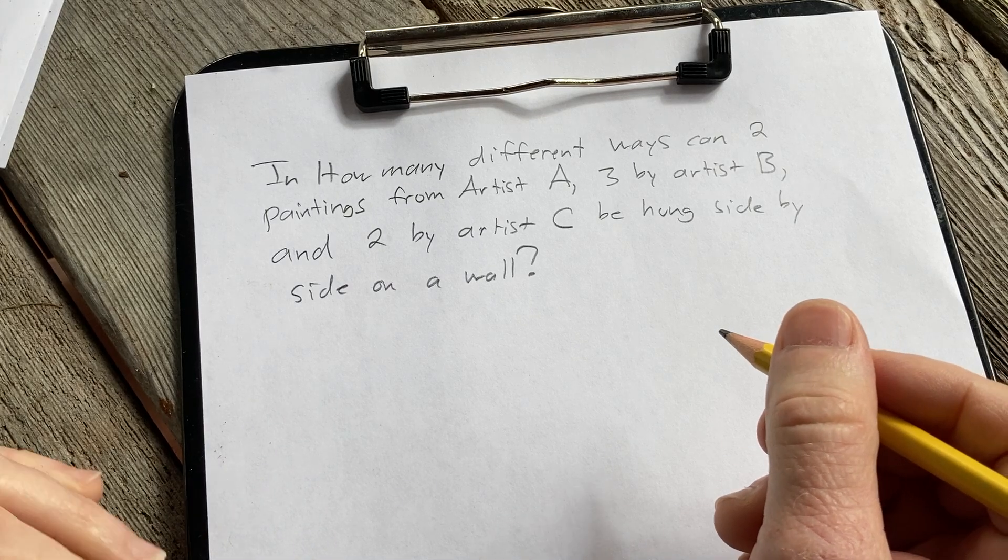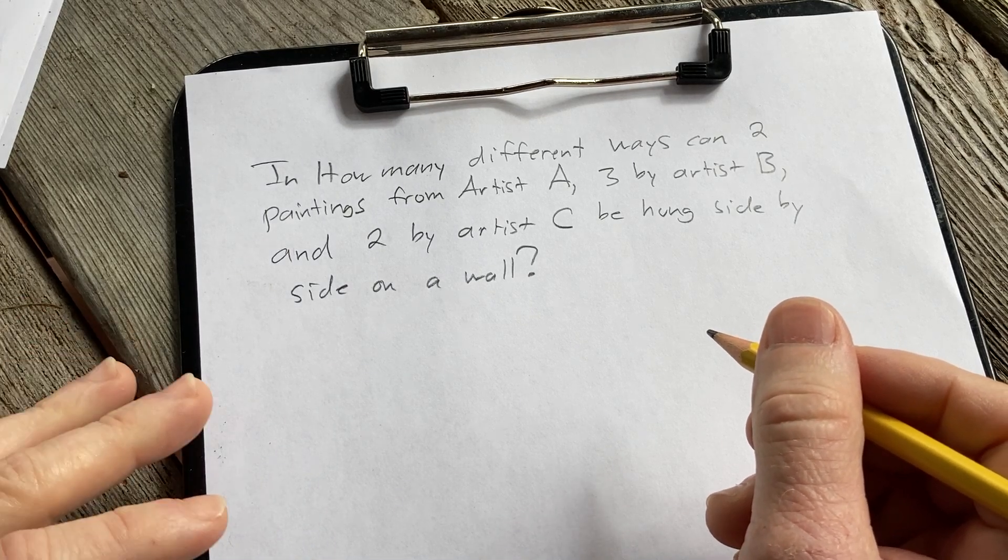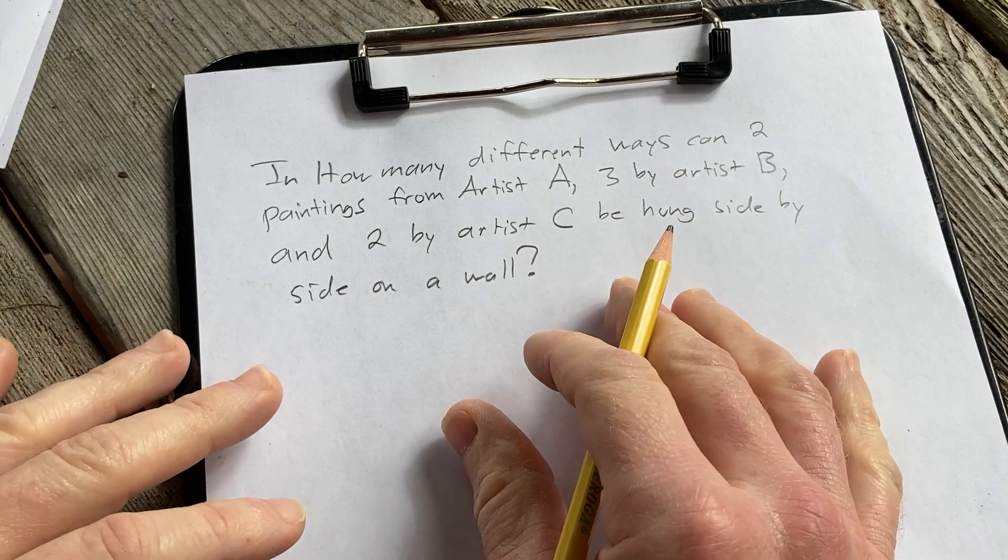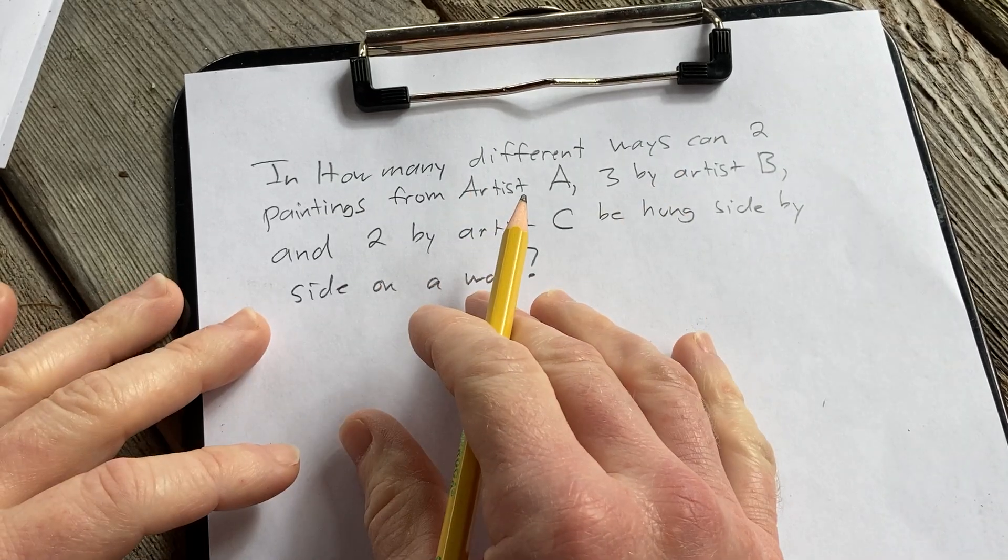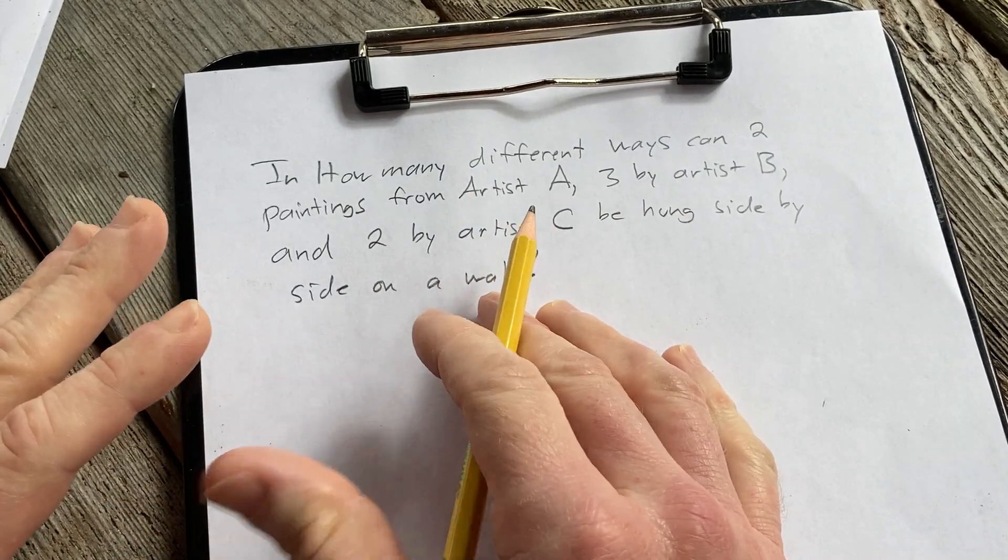Hi, in this video we're going to do a counting problem with permutations where some of the objects are identical. Let's go ahead and read the question carefully and work through it.